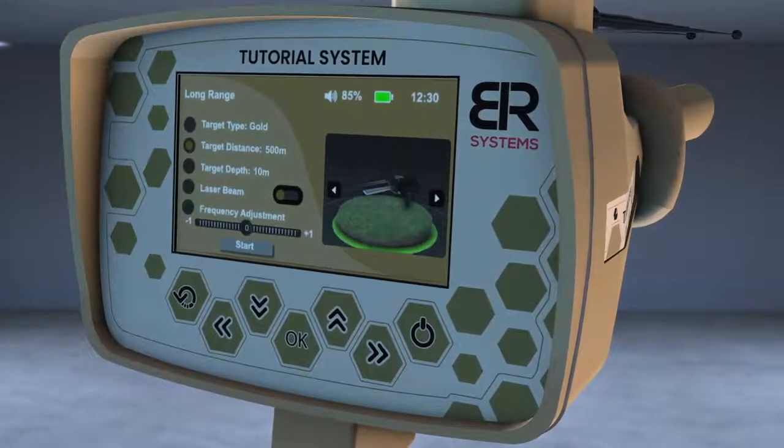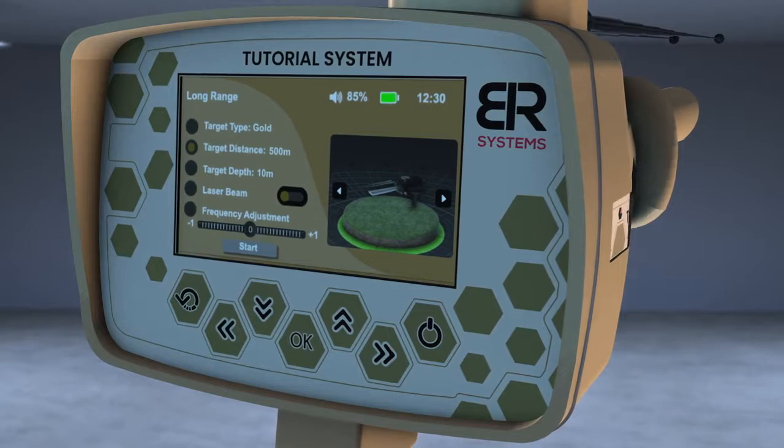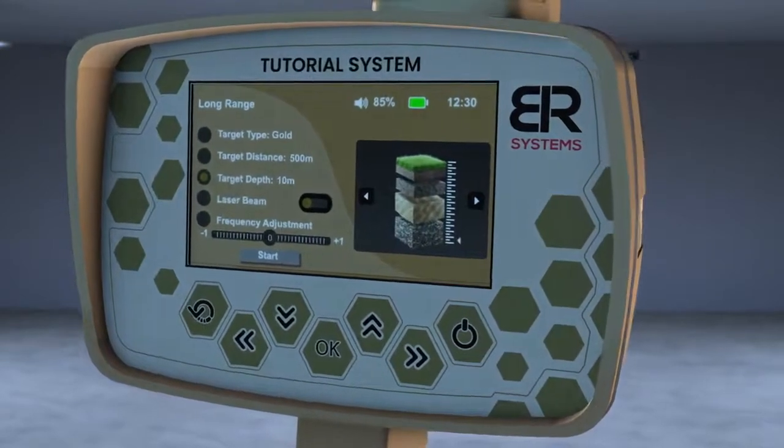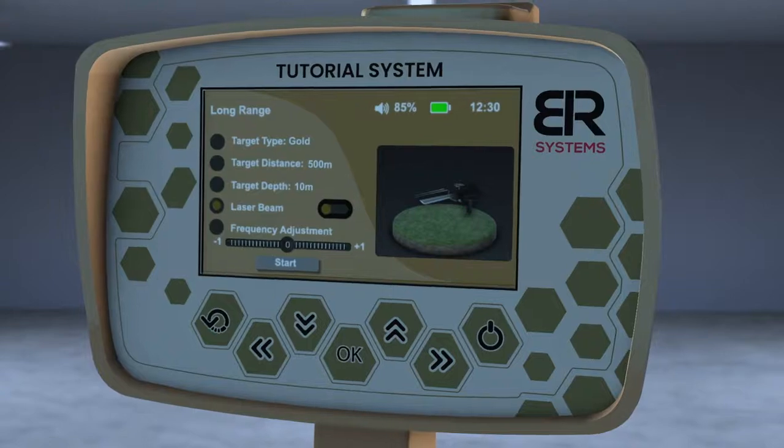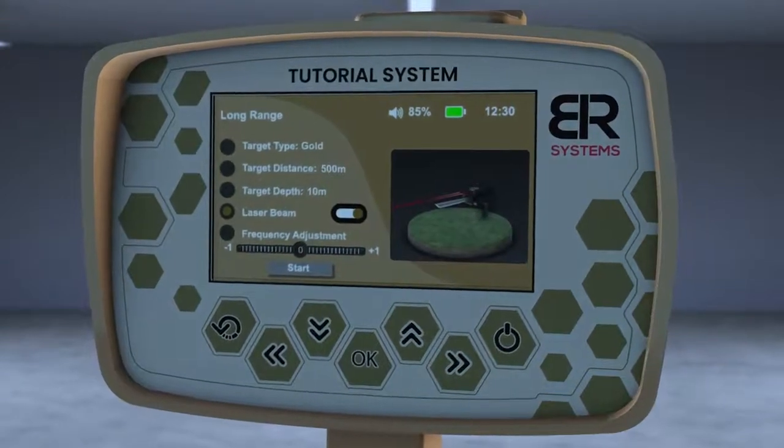Choose the front distance, 500 meters as an example, then choose the depth of the target. Then turn on the laser pointer to better know the direction of the search pointer.